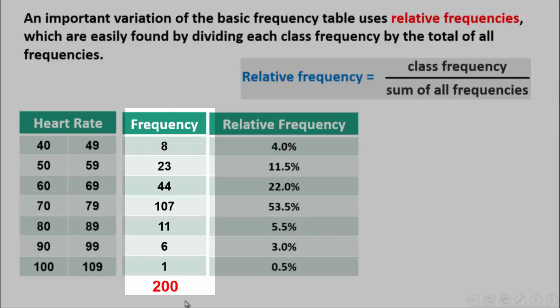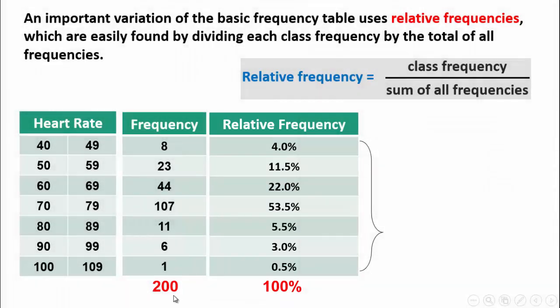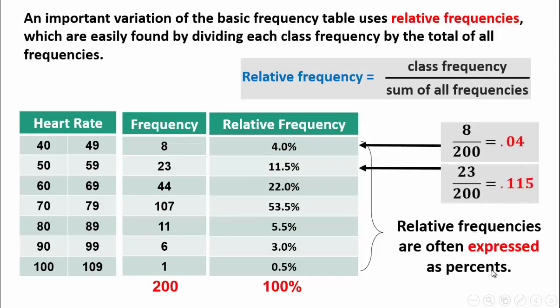The relative frequency can be calculated by dividing the frequency, here is 8, of a certain class divided by the total. So the relative frequency of this class is 4%. The first class has a frequency of 8 divided by 200, so it's 0.04. The relative frequency is 0.04 or 4%.